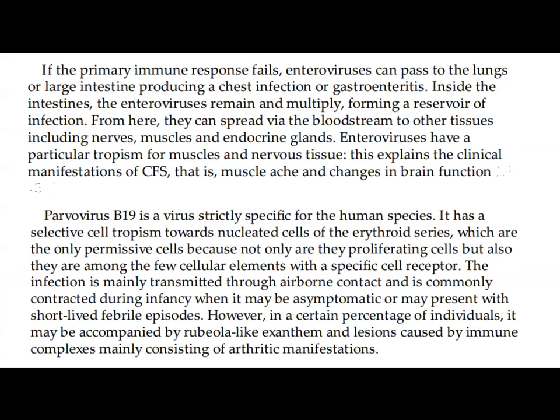If the primary immune response fails, enteroviruses can pass to the lungs or large intestine producing chest infection or gastroenteritis. Inside the intestines, the enteroviruses remain and multiply — that's why they're called enteroviruses — forming a reservoir of infection. From here, they can spread via the bloodstream to other tissues, including the nerves, muscles, and endocrine glands.